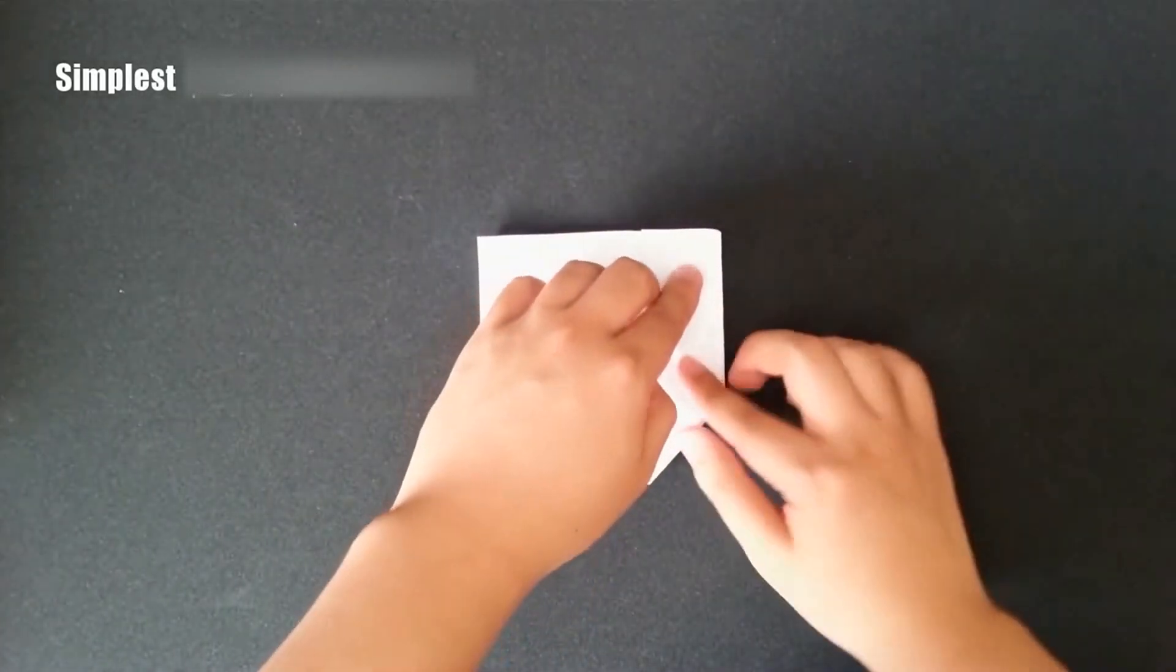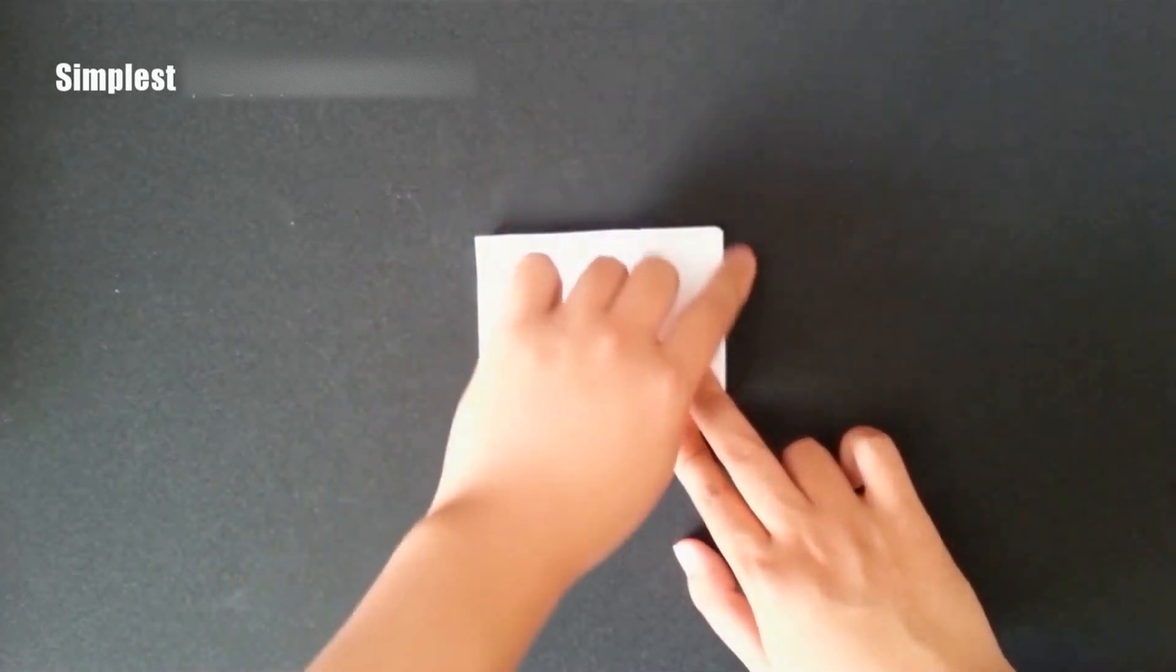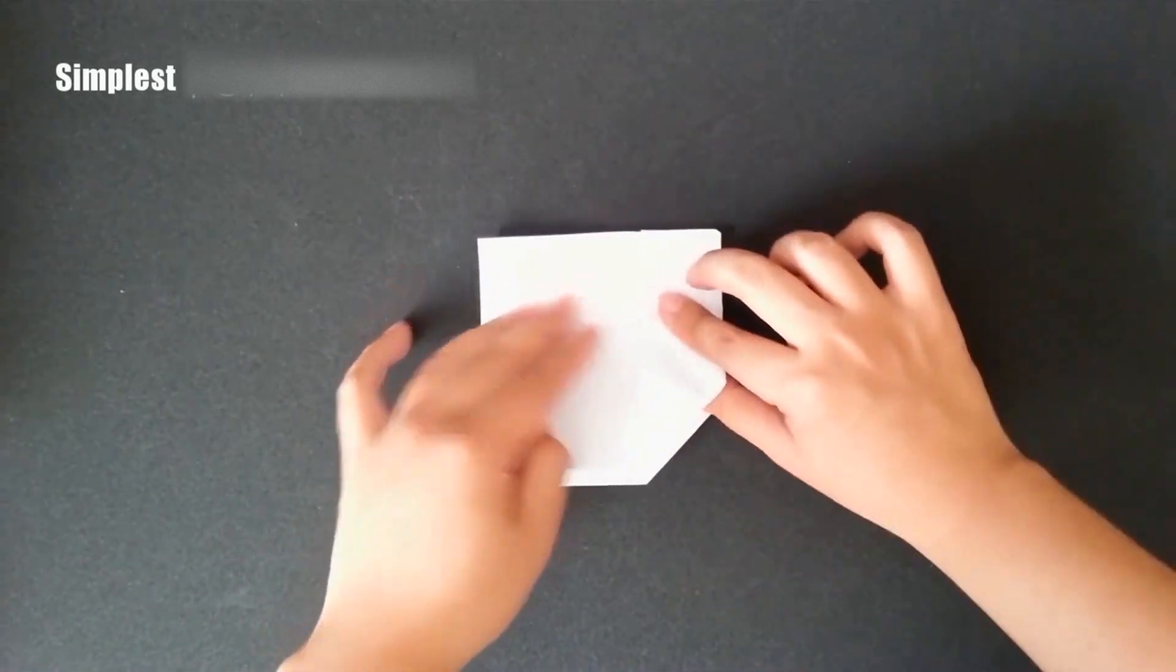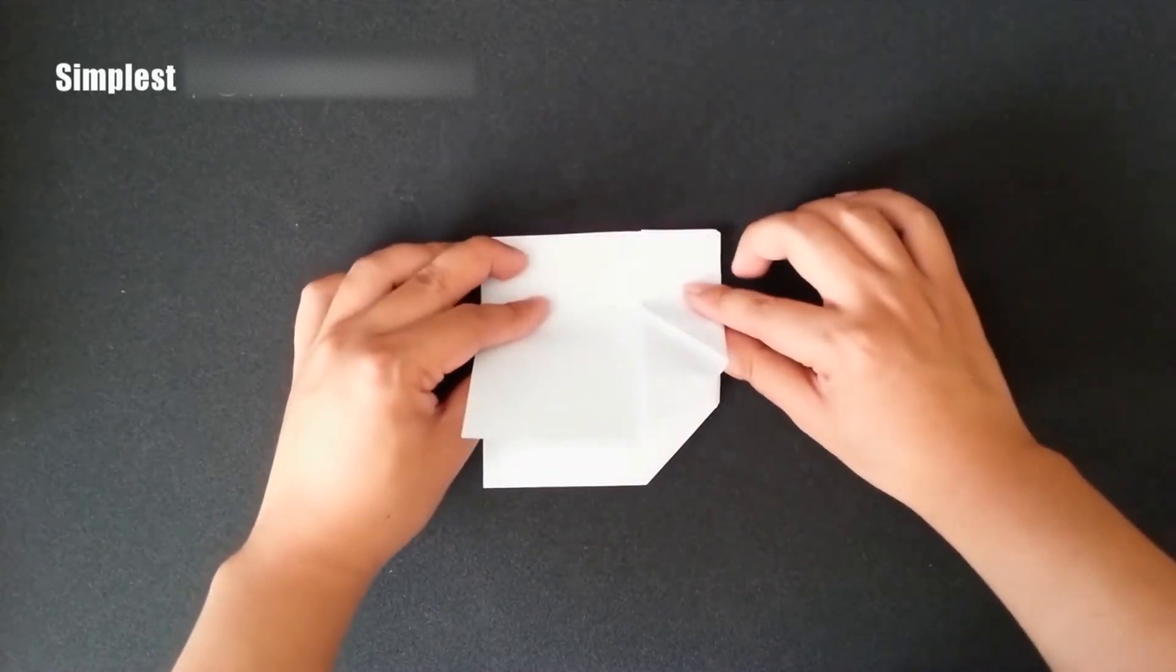Eighth step. I estimate about a half of an inch from this edge along this edge. And fold this layer out, I mean fold this layer down to create a wing.